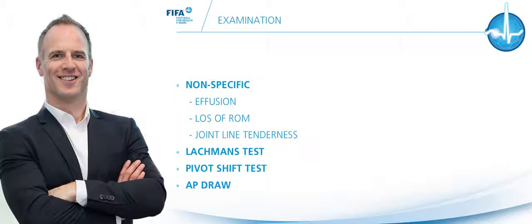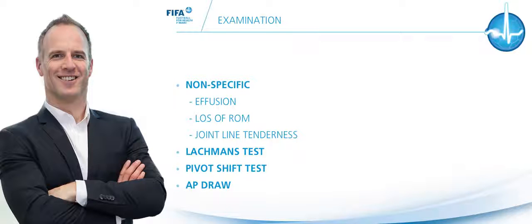Lachman's test is the most single reliable test, with a reported sensitivity of 85% and specificity of 95%. But if you combine that test with an AP draw and a pivot shift test, you can increase the sensitivity and specificity even further. Those three tests are the best individual tests for assessing the integrity of the anterior cruciate ligament.